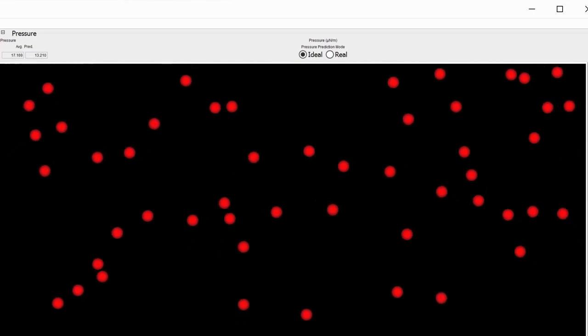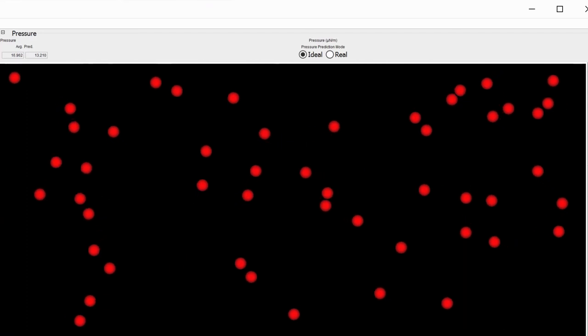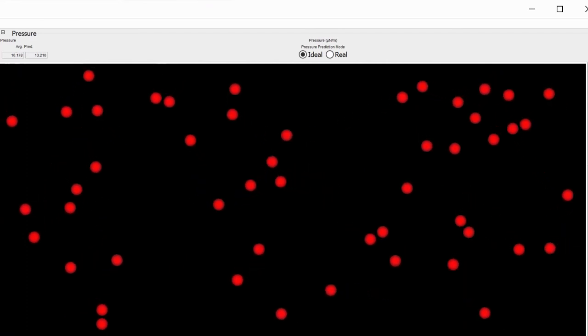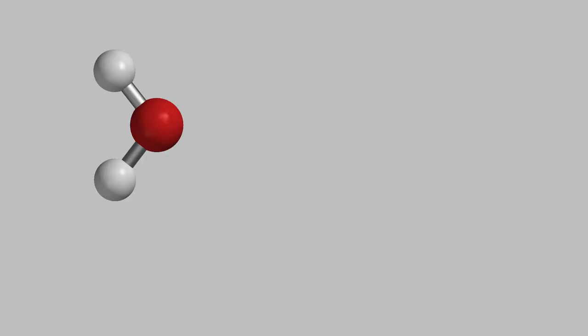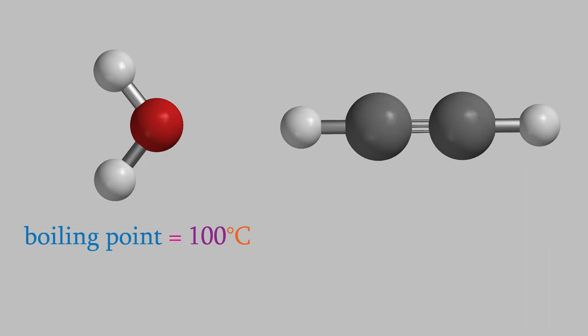That's also why nitrogen has to get so cold before it becomes a liquid — the molecules have to slow down so that they stay close to each other long enough to feel the London dispersion. In order to become a liquid or a solid, nonpolar substances usually need to get much colder than dipoles of the same size. For example, water is a very polar molecule and it has a boiling point of 100 degrees Celsius. On the other hand, acetylene has a boiling point of negative 84 degrees Celsius, because acetylene is a nonpolar molecule, so the only intermolecular force it can feel is London dispersion.